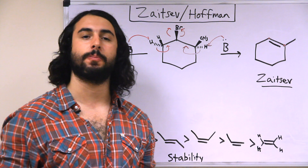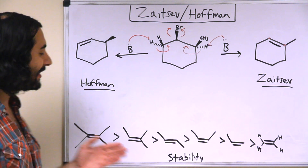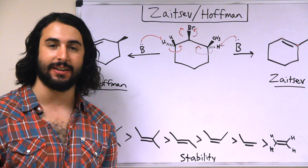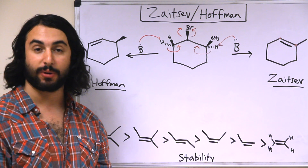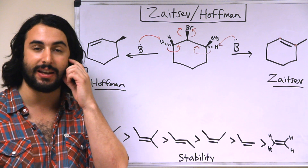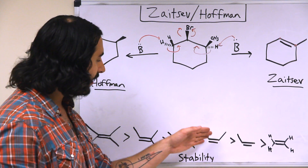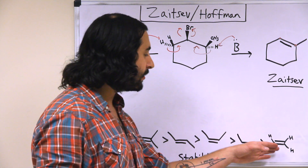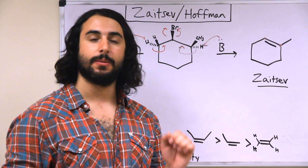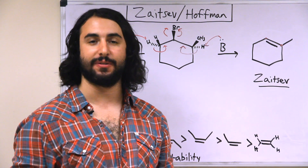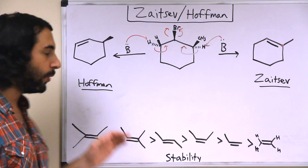We need to understand which product will dominate and when. To understand that, we need to know something about alkene stability. The more substituted an alkene is, the more stable it is — similar to carbocation stability with hyperconjugation. A tetra-substituted alkene is the most stable, then tri-substituted, then E di-substituted, Z di-substituted, then mono-substituted, and then unsubstituted is the least stable. That means the Zaitsev product is more stable and therefore thermodynamically favored — it is the thermodynamic product — while the kinetically favored product will be the Hoffmann product.